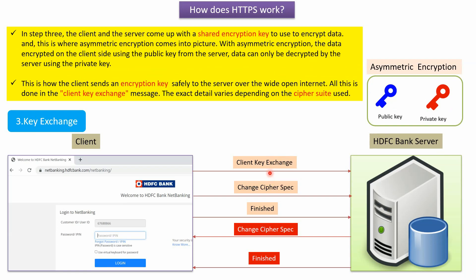In Step 3, the client and server come up with a shared encryption key, which is used to encrypt the data. This is where asymmetric encryption comes into picture. With asymmetric encryption, data is encrypted on the client side using the public key received from the server, and the encrypted data can only be decrypted by the server using its private key. This is how the client sends the encryption key safely to the server over the internet, done through the Client Key Exchange message.